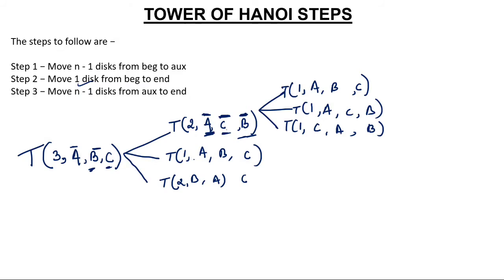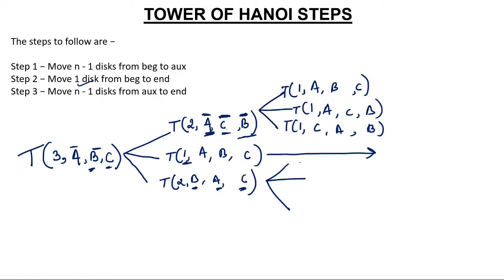Since the value is now 1, we don't break it further — we keep it as is. When the value is 1, the function is a base case. Applying the formula one more time: move 2−1 = 1 disc from beginning (B) to auxiliary (A), with C in the middle. This completes the recursive breakdown.